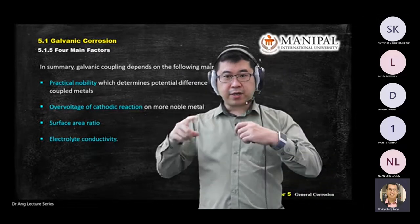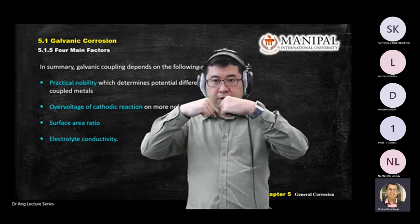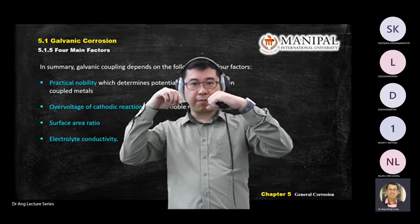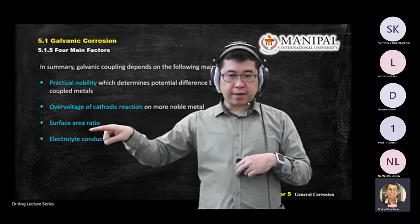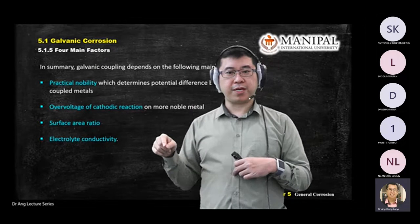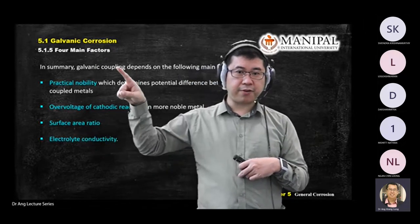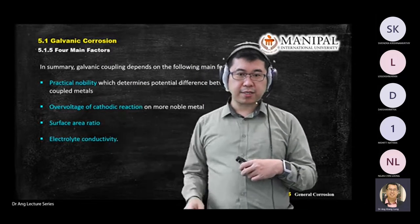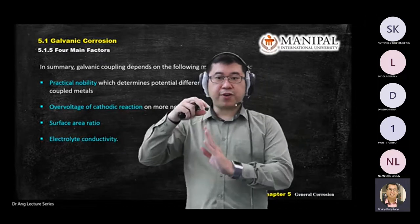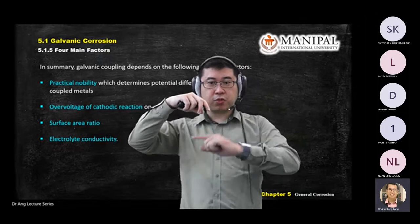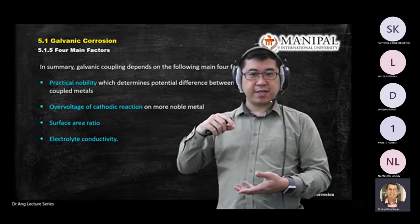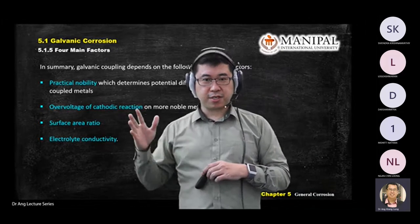The fourth factor is the conductivity of the electrolyte. When two metals are coupled, they must be connected through a solution — use the keyword 'electrolyte,' not just 'solution.' The more conductive the electrolyte, the faster the exchange of electrons between the two metals, and therefore the faster the corrosion rate.